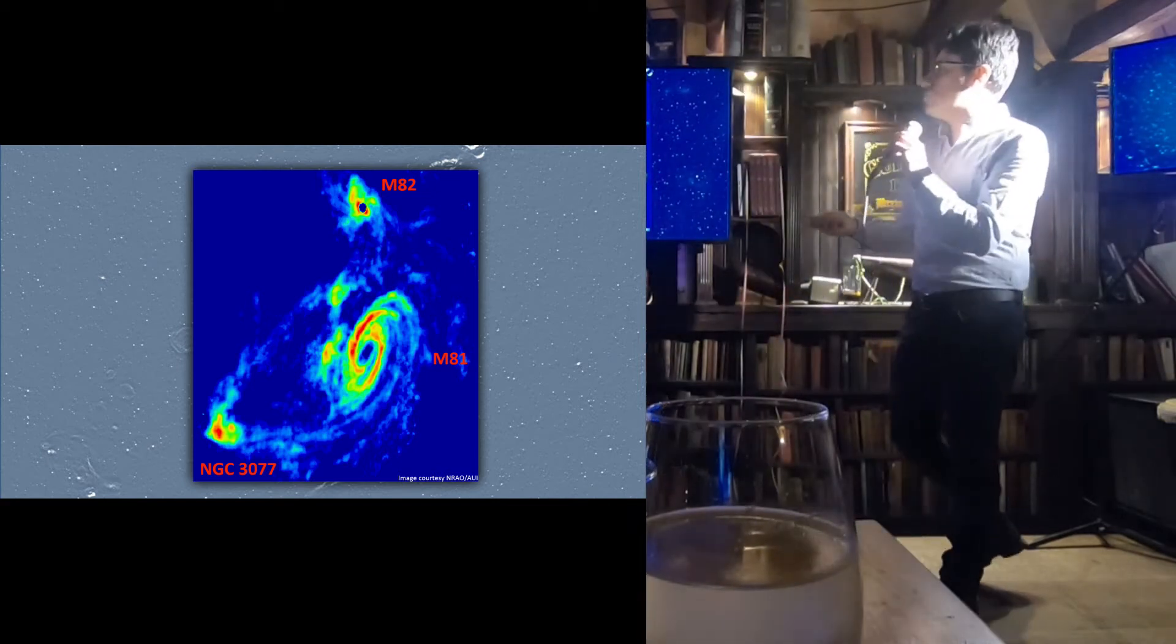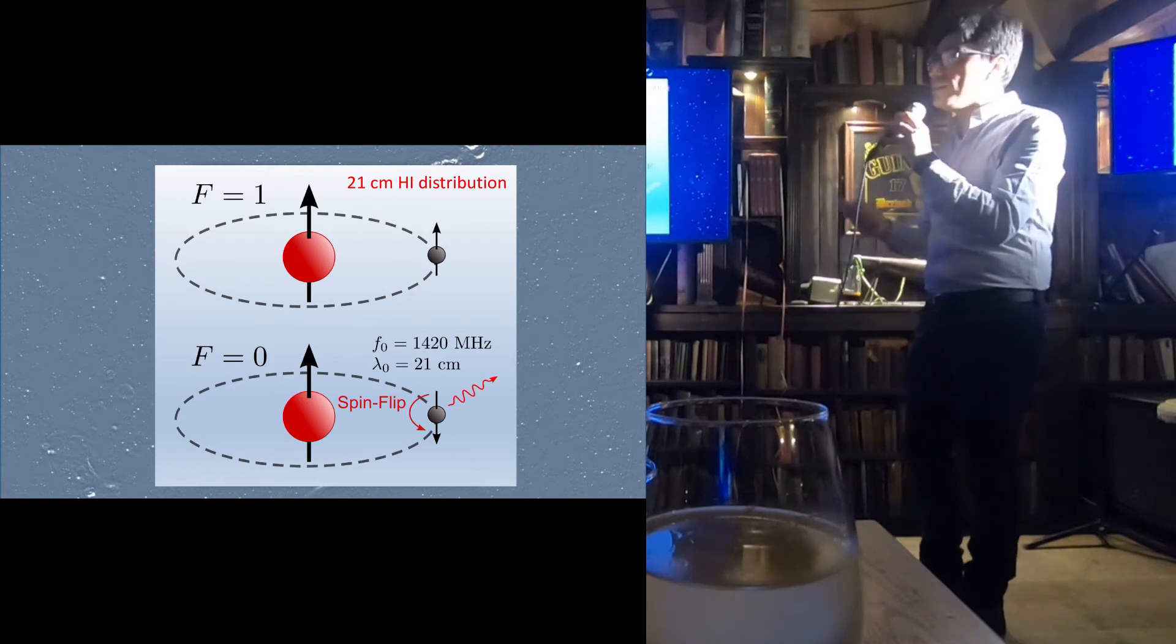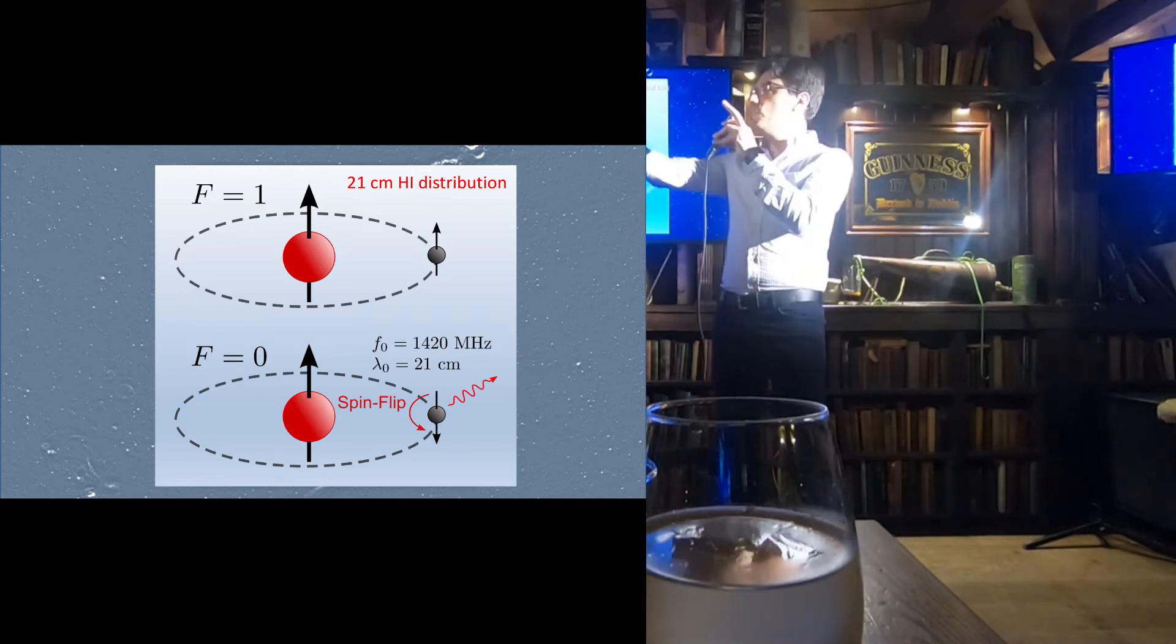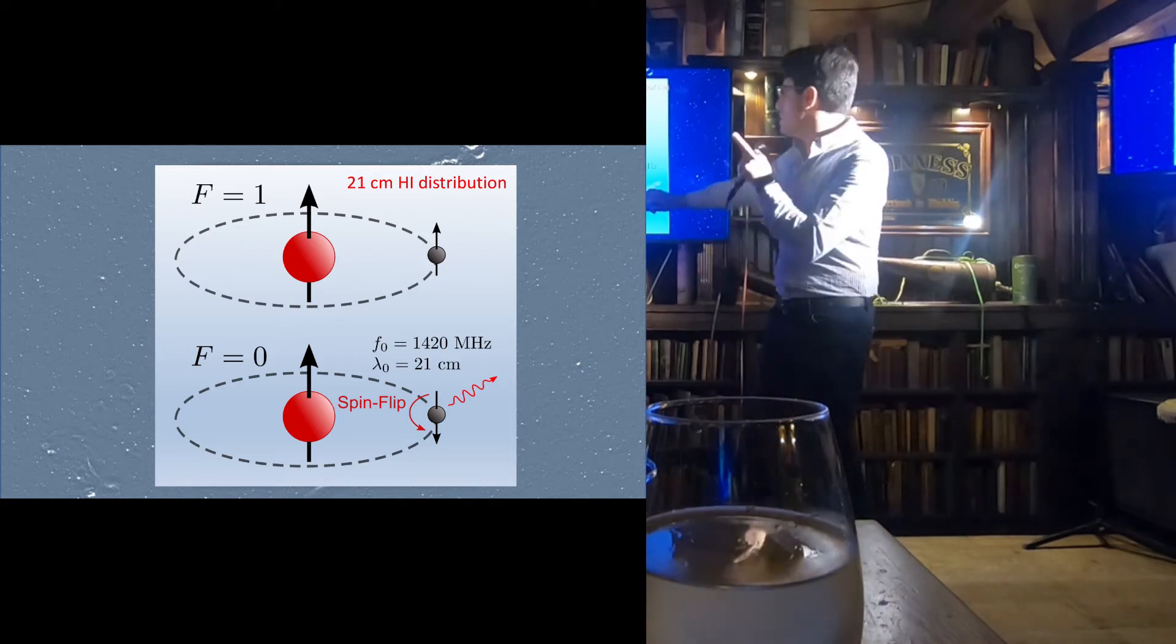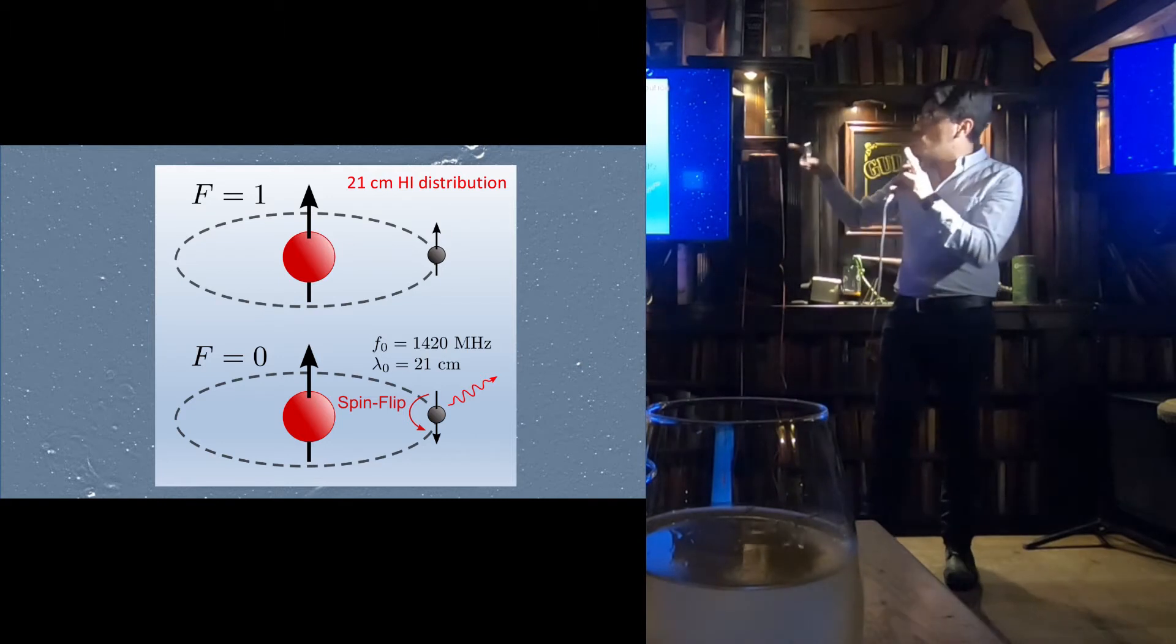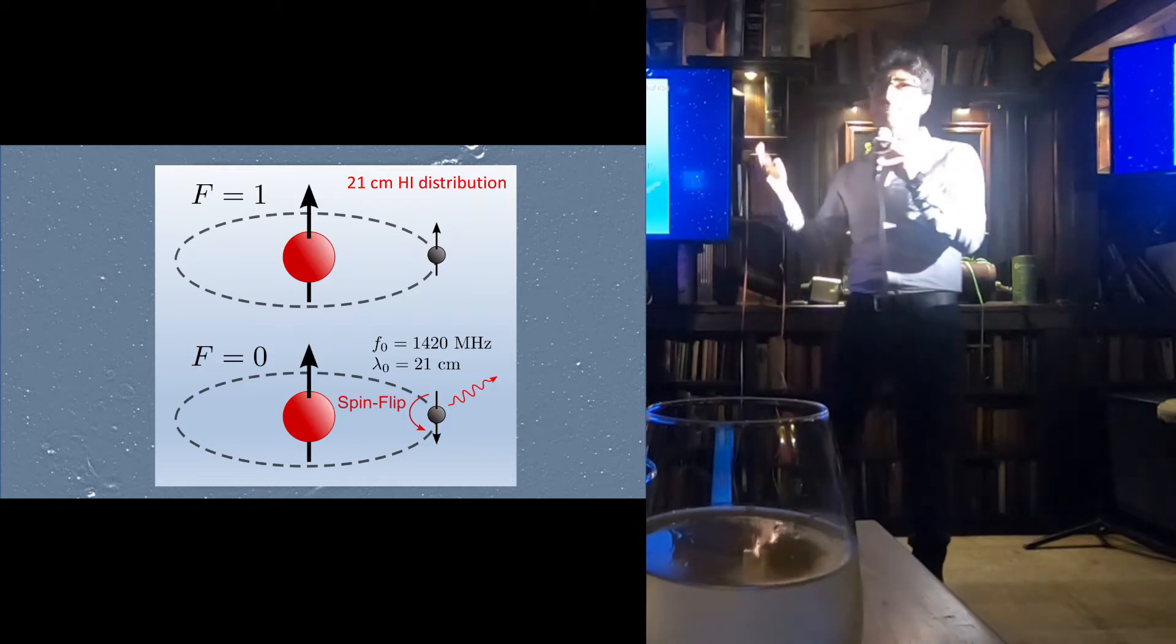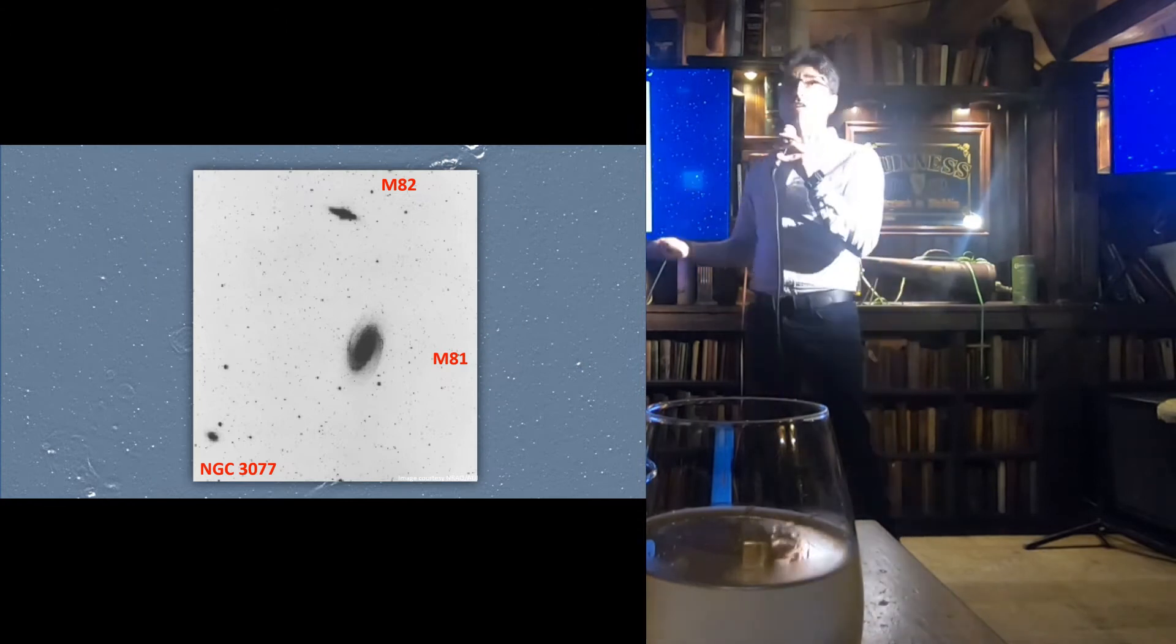This radio emission is produced by a spin transition of an electron that is, you know, spiraling, rotating around a proton. And at some point, the electron will flip the spin and will produce a photon that is exactly 21 centimeters, which is radio wavelengths. This is why this kind of emission is invisible to other wavelengths. This is why this is the hidden side of the world. You can only see this distribution here only if you look at radio frequencies.